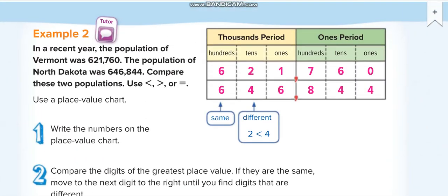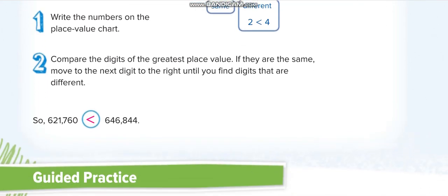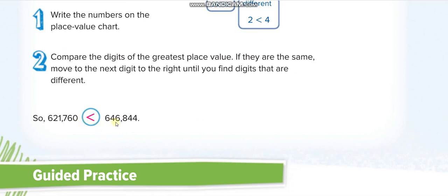The next example: in a recent year, the population of Vermont was six hundred twenty-one thousand seven hundred sixty, and the population of North Dakota was six hundred forty-six thousand eight hundred forty-four. Which is greater? The first digit is six and six — same. The second digit is two and four — four is greater, so six hundred forty-six thousand is greater than six hundred twenty-one thousand.